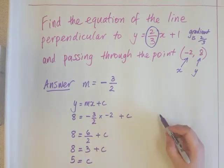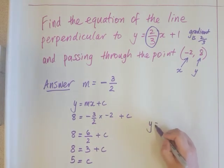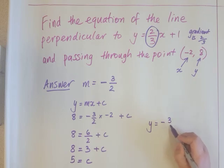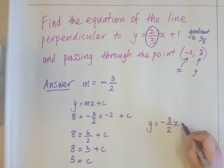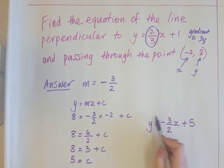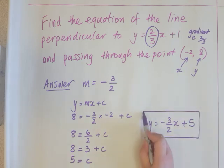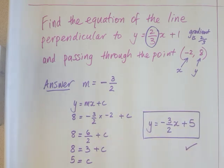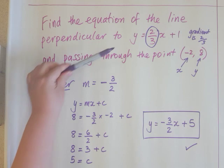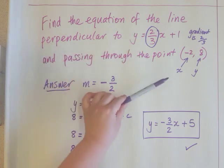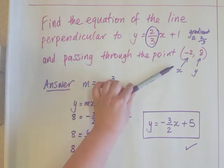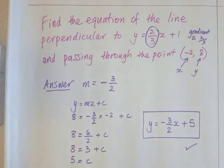So here's our equation. Y equals negative three over two x plus five. And this is the equation of a line which is perpendicular to this line here and it will go through the point negative two, eight. Thank you.